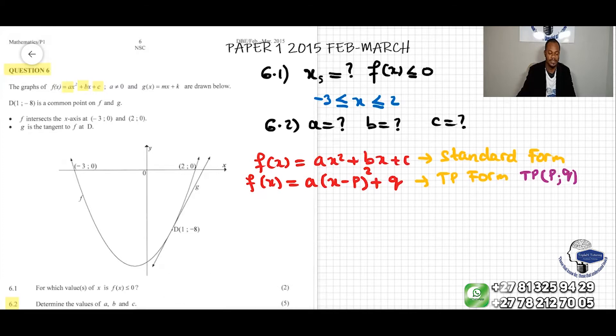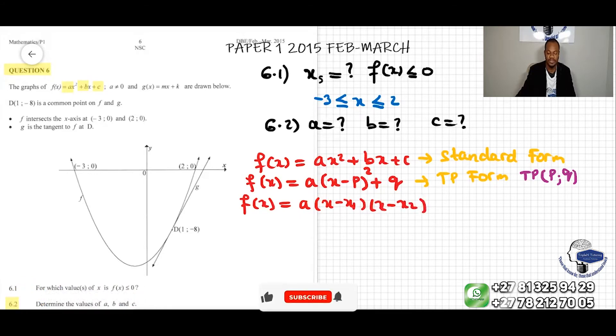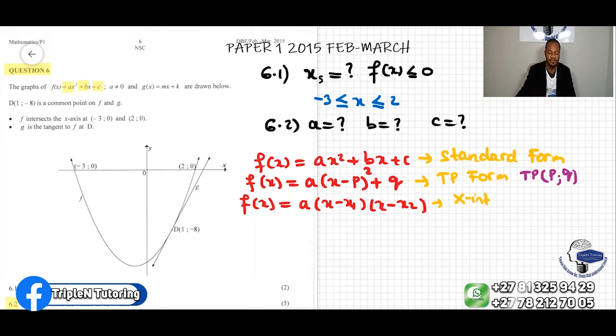We also know that f(x) can be given by a(x - x₁)(x - x₂). This is called the intercept form, the x-intercept form, where the intercepts are x₁ and x₂.